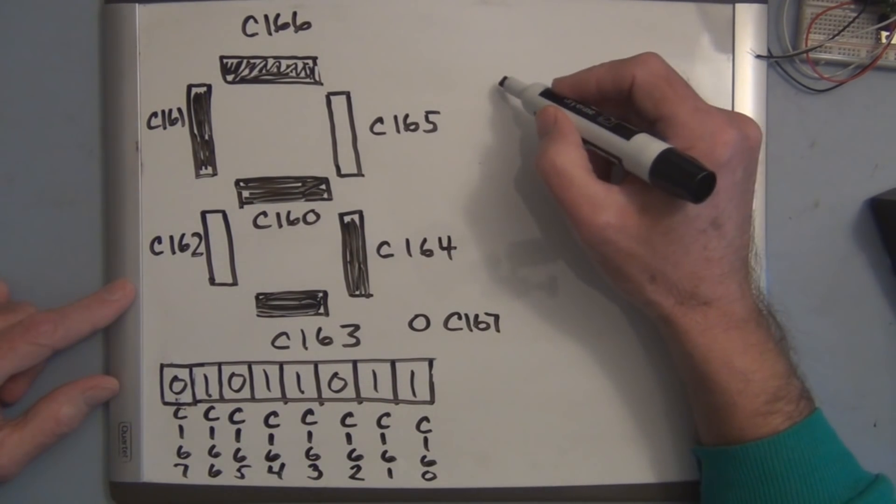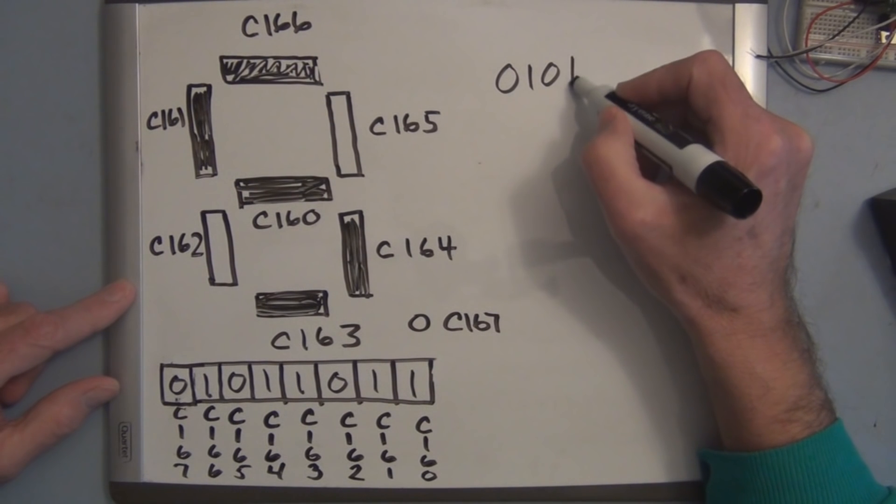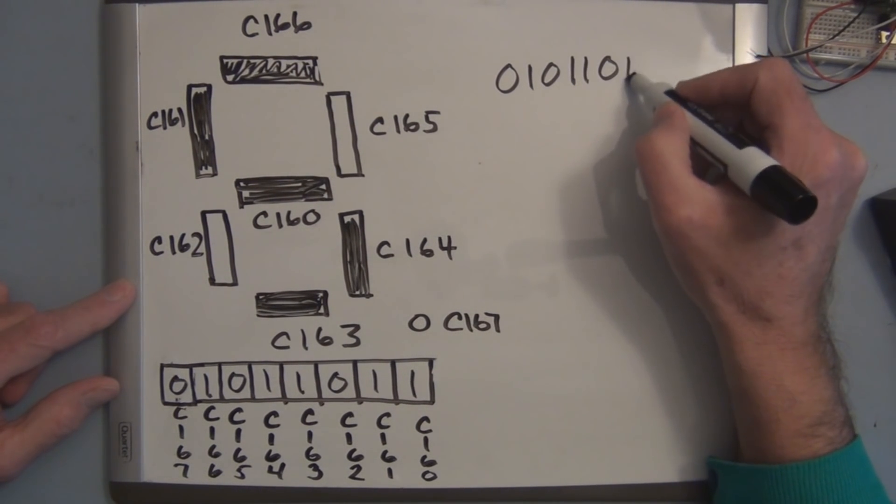So we have a binary number 0, 1, 0, 1, 1, 0, 1, 1.